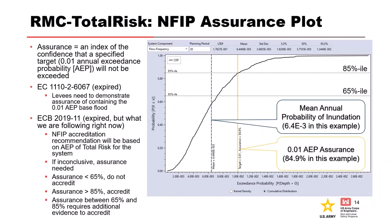Total Risk is still in beta, so it hasn't been officially adopted. But it has gone through a few levels of review. I would encourage you to download it from the RMC's website and start getting familiar with it because it's a really great product. But if you're actually going to be making decisions, you might want to verify with your vertical chain whether you should be using At-Risk or Total Risk to come up with your assurance estimates.